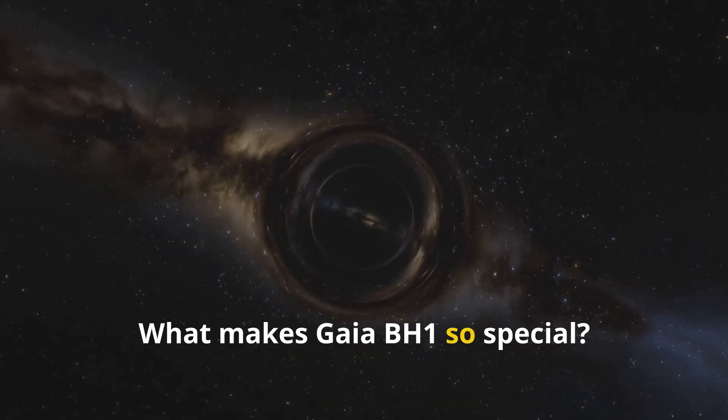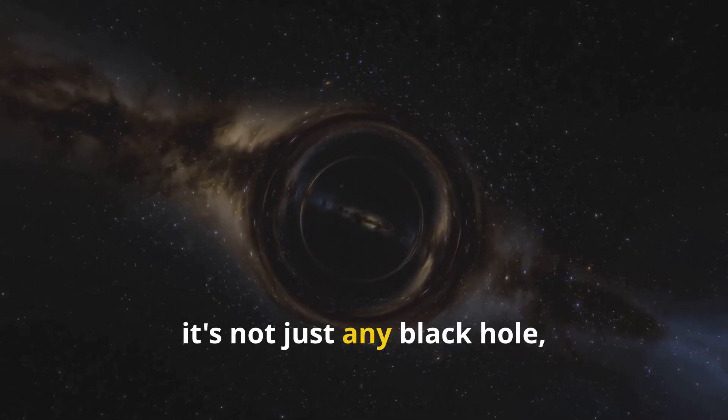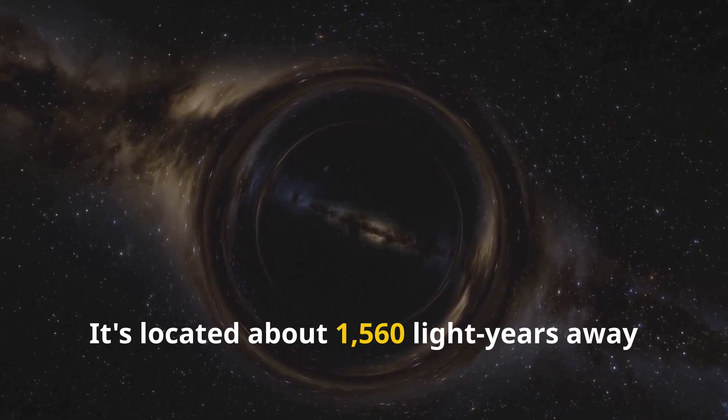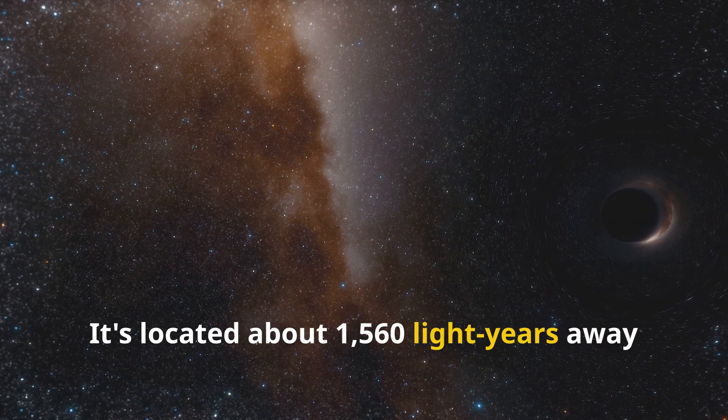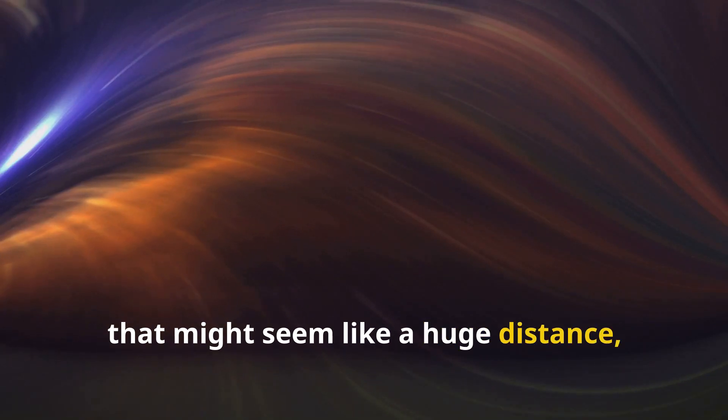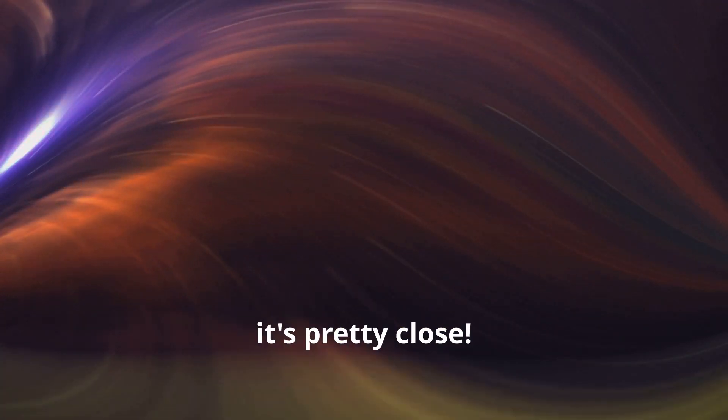What makes Gaia BH1 so special? Well, it's not just any black hole, it's our neighbor. It's located about 1,560 light years away from Earth. Now, that might seem like a huge distance, but in cosmic terms, it's pretty close.